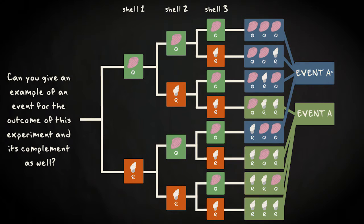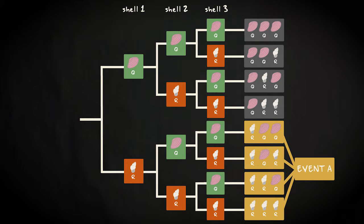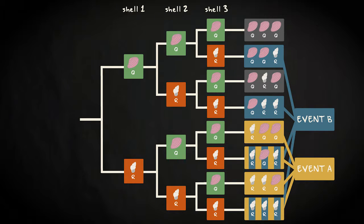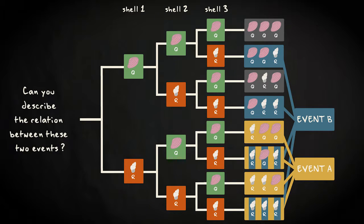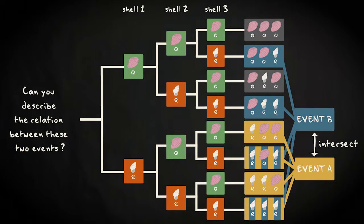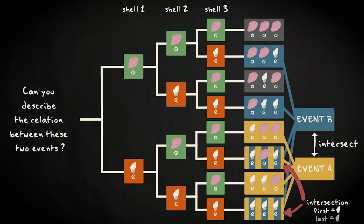Now consider the event that the first shell you pick up would be an R shell, and another event that the last shell you pick up is an R shell. Can you describe the relation between these two events? Clearly, these two events are not disjoint, because they overlap — so these two events are said to intersect each other. The intersection of the two events is a subset of both events: cases where the first shell you pick up is an R shell and also the third shell you pick up is an R shell.